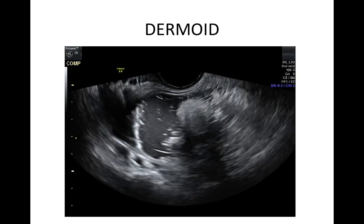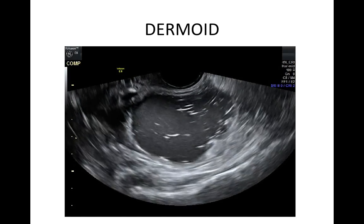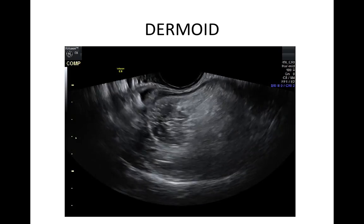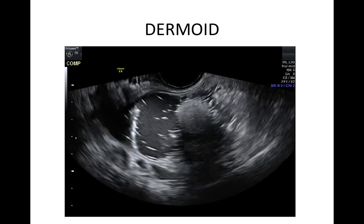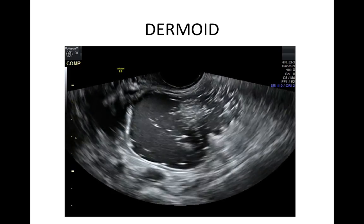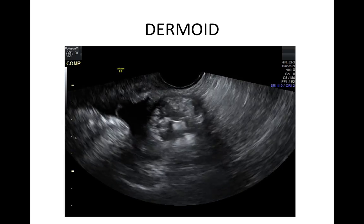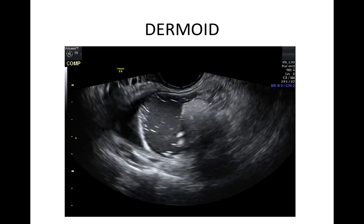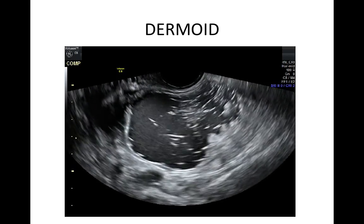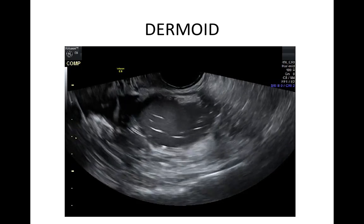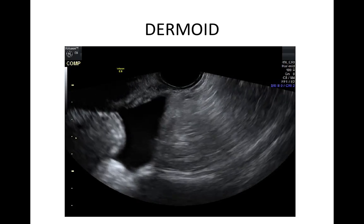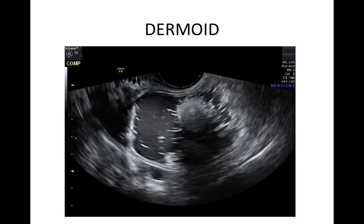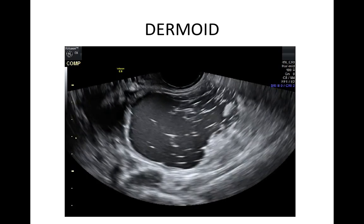A dermoid or mature cystic teratoma is typically a unilocular cyst with no solid material. The white ball or Rokitansky nodule does not count as solid material. There is mixed echogenicity with some bright echoes, dense shadowing and minor vascularity. The fine lines are typical of hair floating in sebum. Posterior acoustic shadowing can be dense due to the presence of bone or teeth.